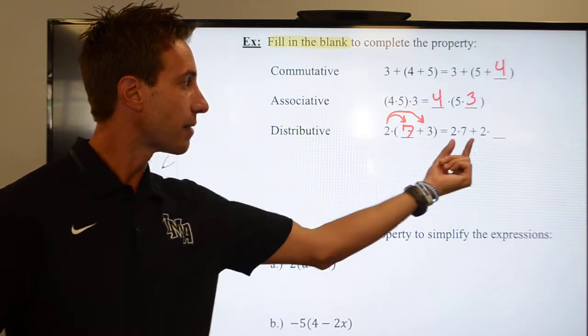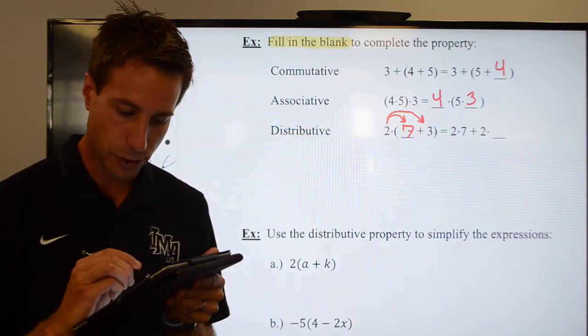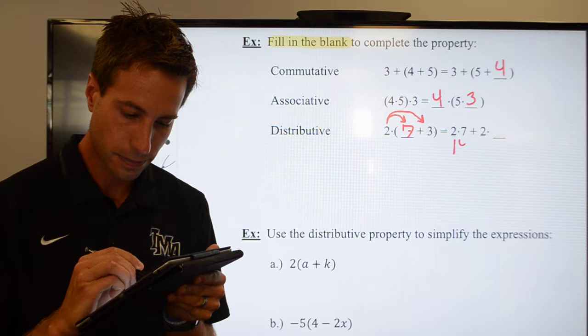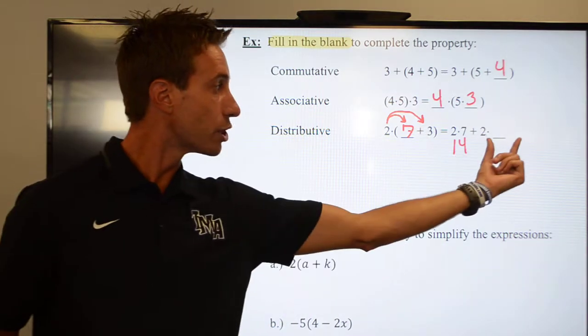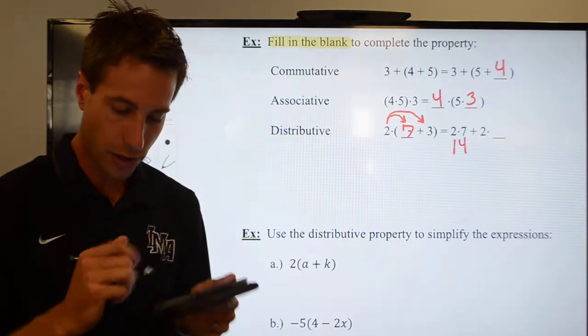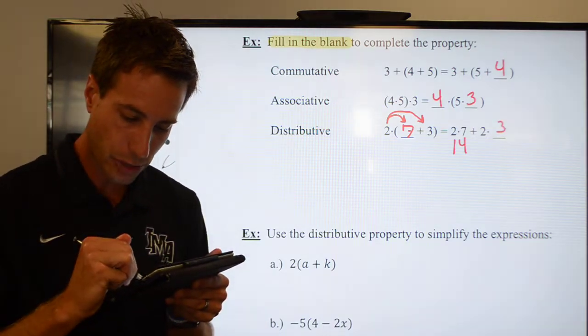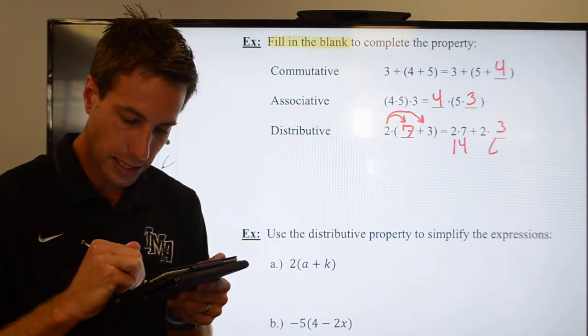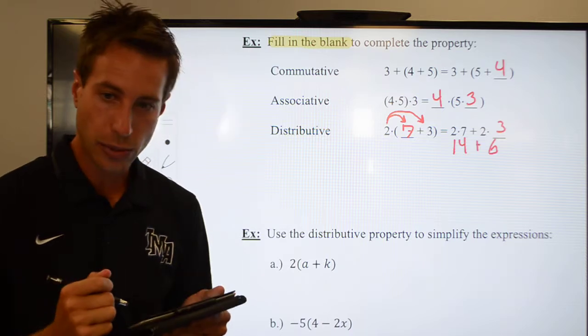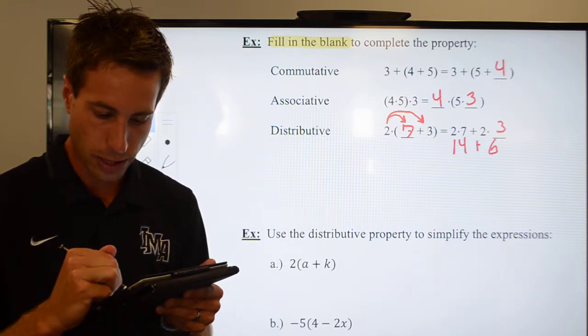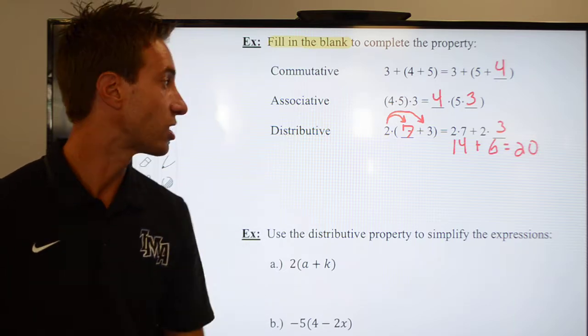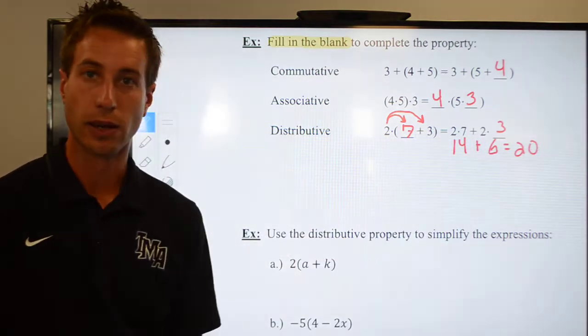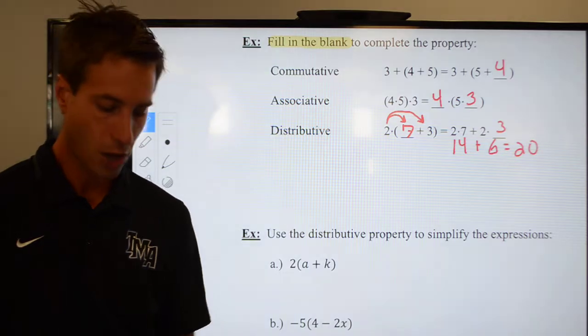So when I multiply 2 times 7, that'll get me my 2 times 7, which of course is 14. Then the next one I would multiply 2 times 3, which appears to be the blank that I'm missing over on the left-hand side. So I would put a 3. 2 times 3 of course is 6. Those are like terms. You can add those guys together and you wind up with 20. Both sides of the equal sign would be equal to 20. All right, let's keep going.